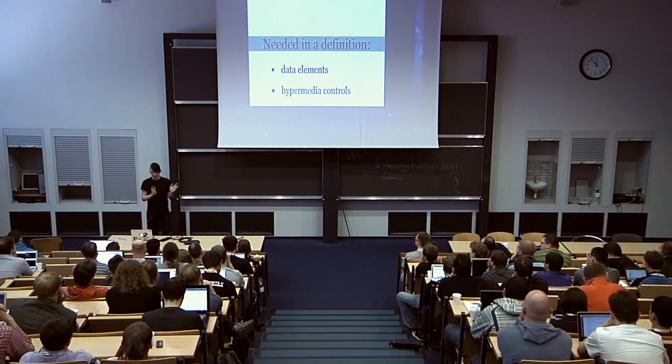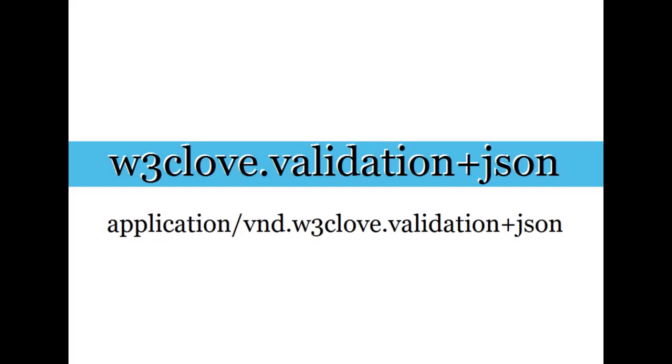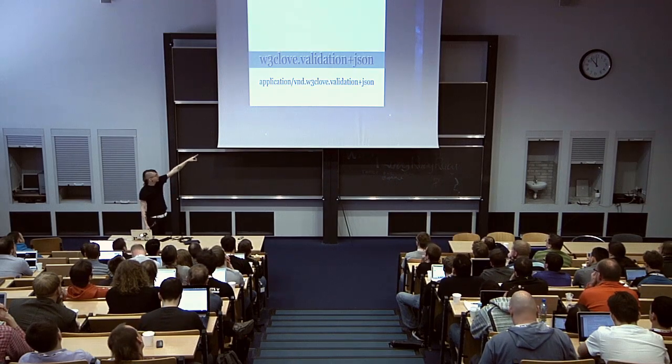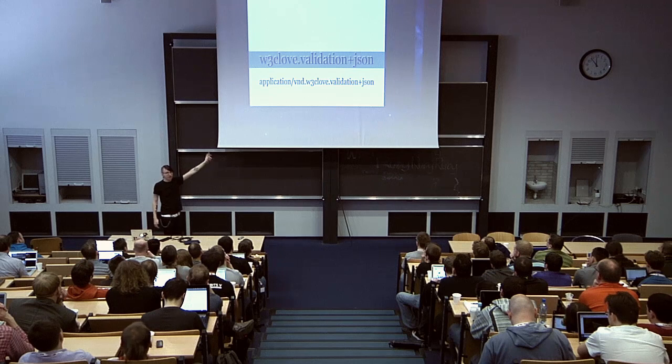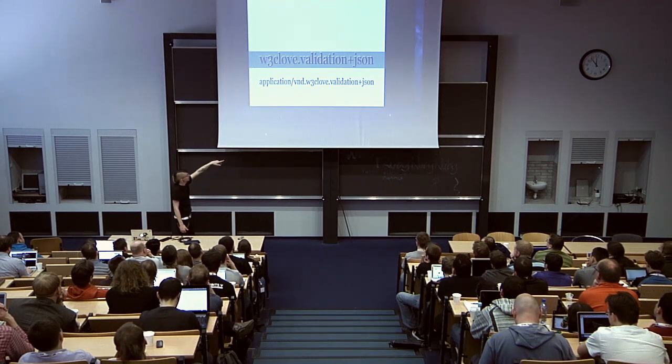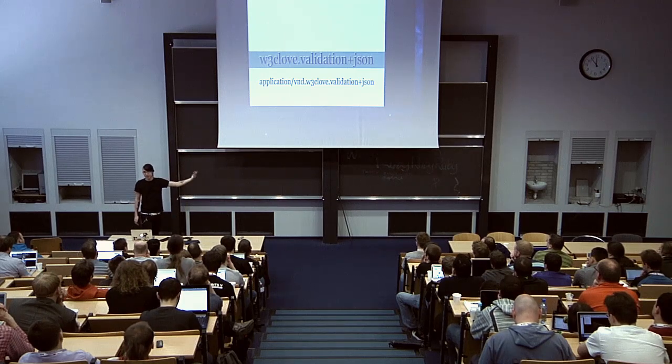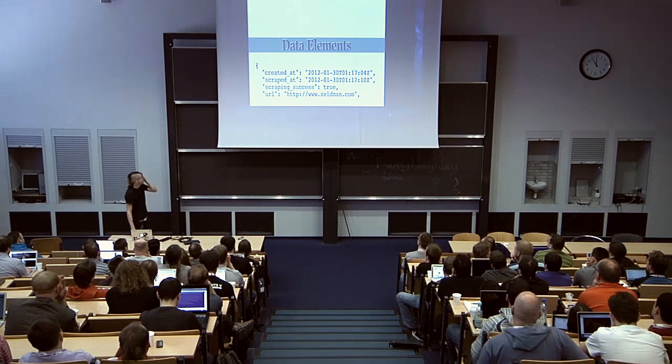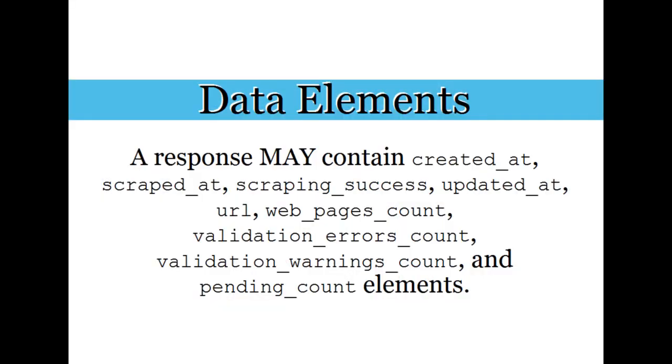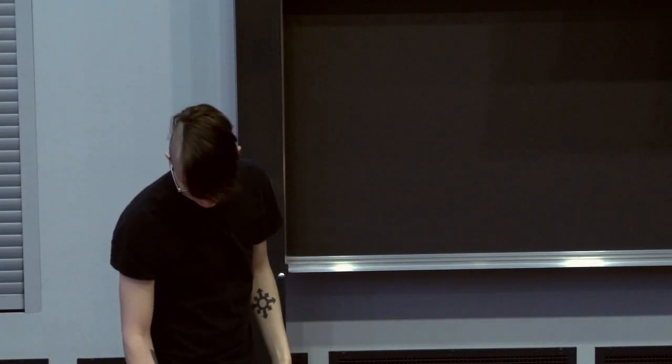This is a large part of what that designing hypermedia APIs with HTML5 and Node book is about: how to design media types effectively. The two things you basically need are the data elements that you want to store. You can do this by just saying here's a list of keys and values, or you can actually specify the data types that you want. Those are both valid. One introduces more coupling than the other, but it depends on your needs. And the hypermedia controls, which are things like links and forms primarily. Ways of connecting your representations together. Hypermedia is all about the links. The hyper is the links and connections.